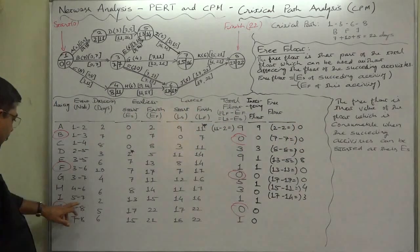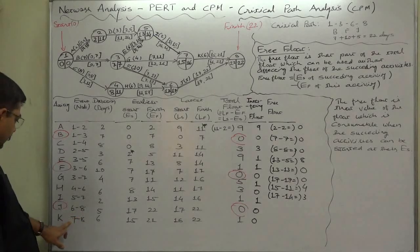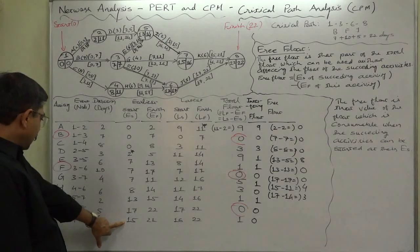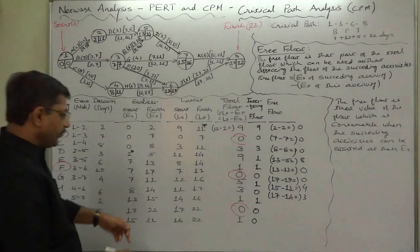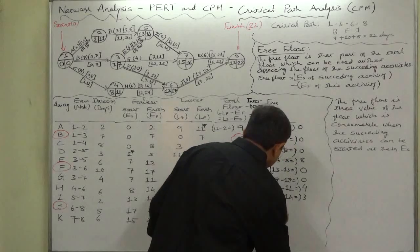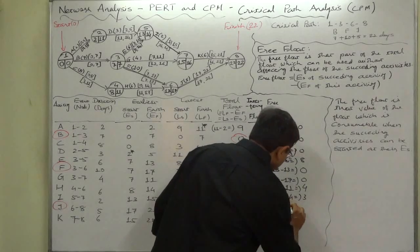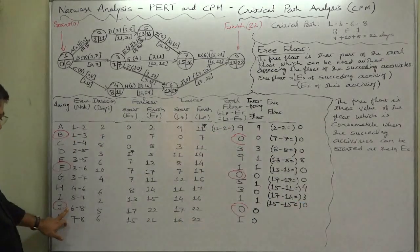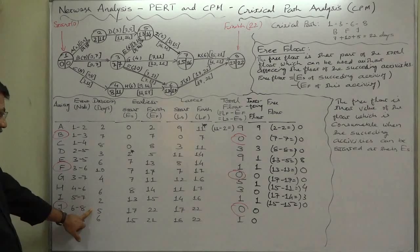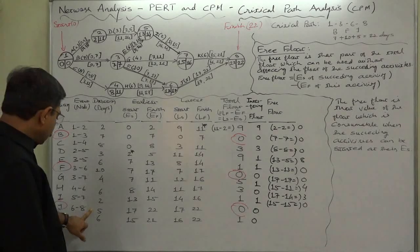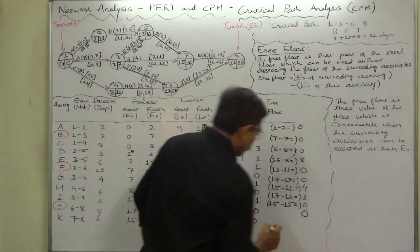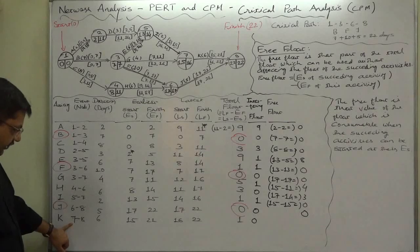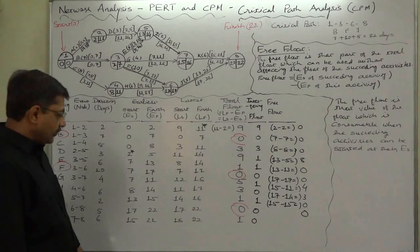For activity I, its succeeding activity is K. Earliest start time of K is 15 and earliest finish time of I is 15, so 15 minus 15 equals 0. For activity J, it has no succeeding activity and J is a critical activity, so its float is zero.